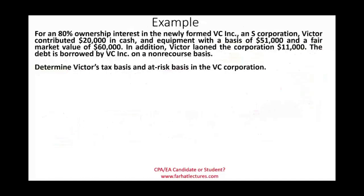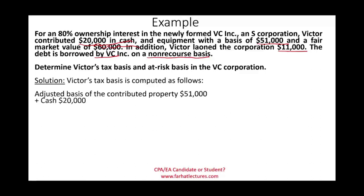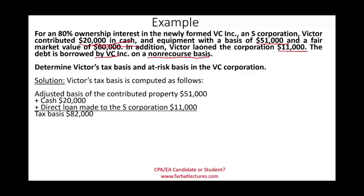Let's look at an example. For an 80% ownership interest in VC Inc., an S corporation, Victor contributed $20,000 in cash and equipment with an adjusted basis of $51,000 (fair market value of $60,000, but we use the adjusted basis). Victor also loaned the corporation $11,000. The corporation borrowed additional funds on a non-recourse basis. Victor's tax basis is computed as: adjusted basis of contributed property $51,000, plus cash of $20,000, plus direct loan of $11,000, for a total tax basis of $82,000.